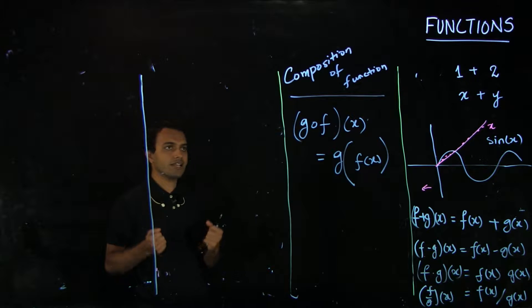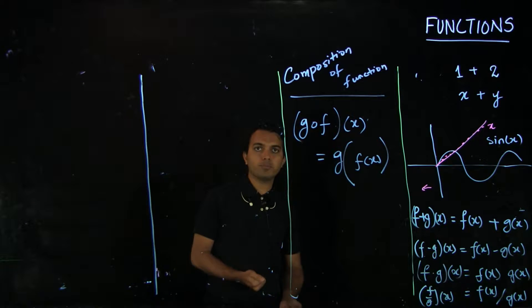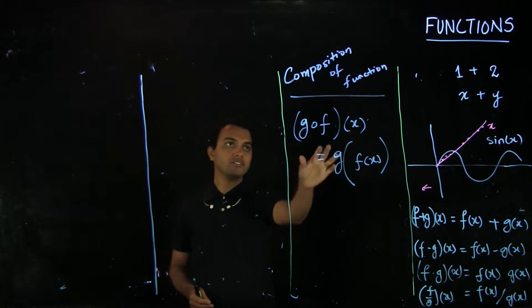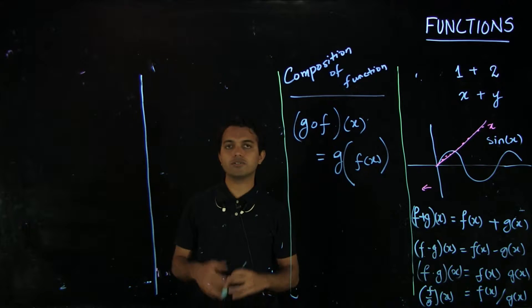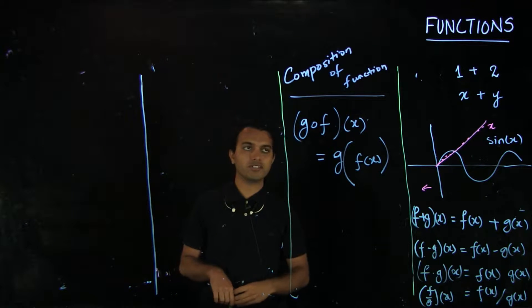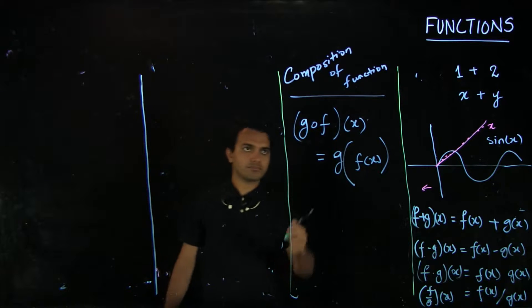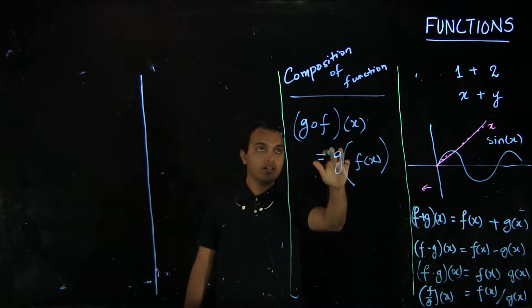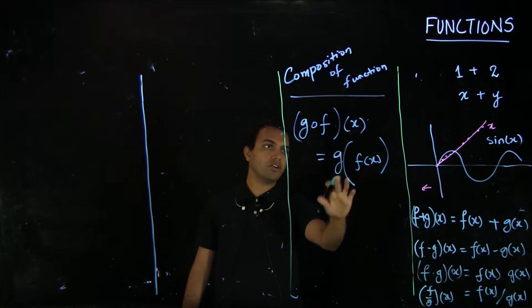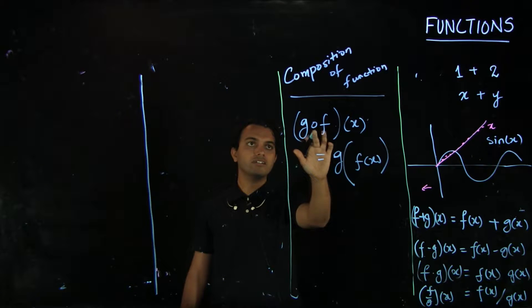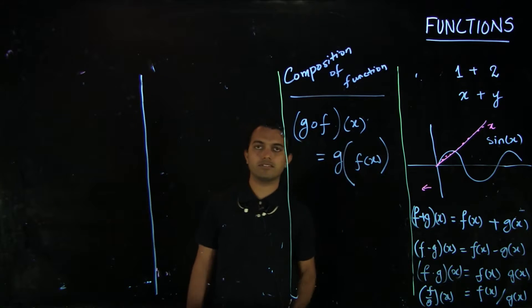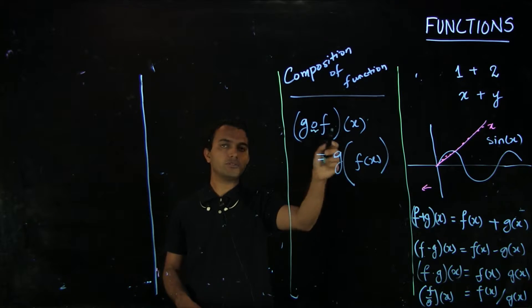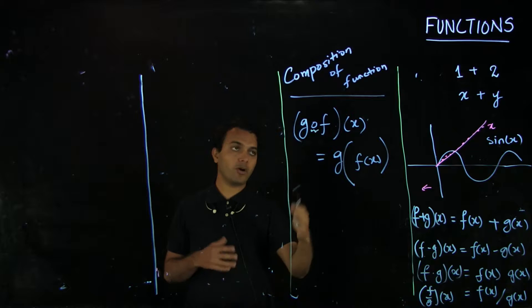Composition of functions is essentially when the output of one function feeds into the input of another function. Here we are seeing composition of two functions, but it need not be limited to only two — you can have more than two functions being composed. A composition of functions is denoted as g of f of x, or written as g small-o f times x. If you see the small 'o' symbol between two functions, that means it is a composition of those two functions.